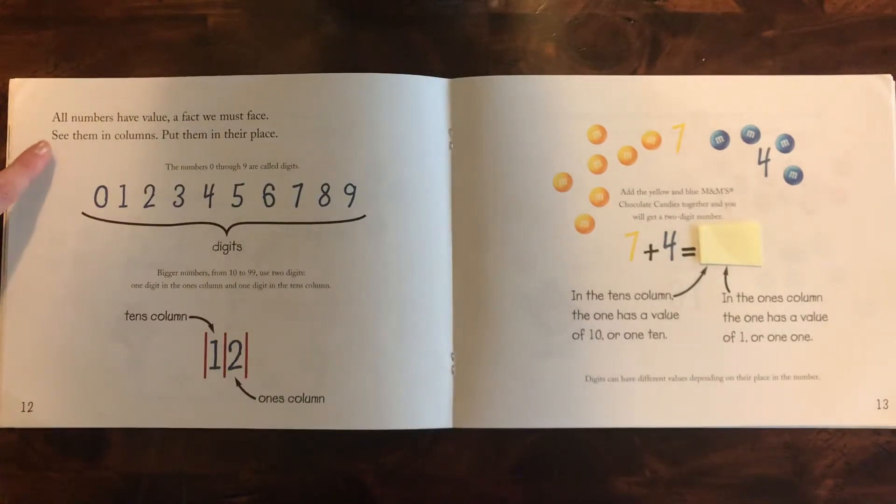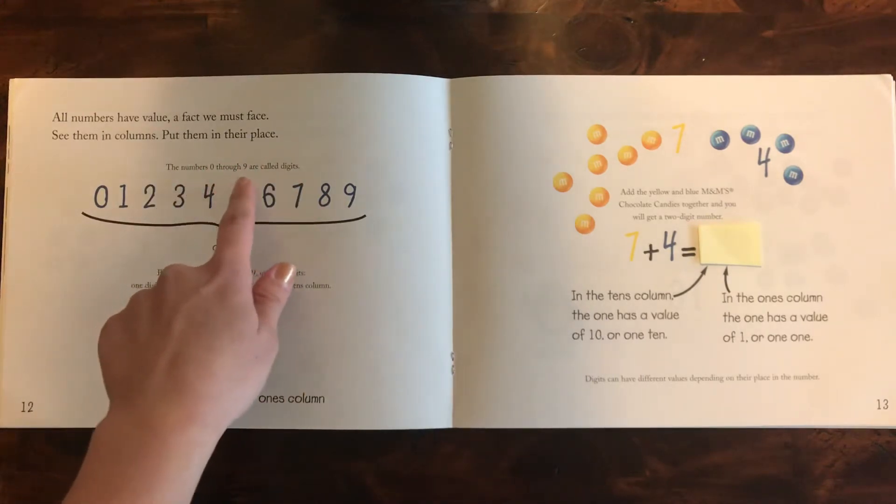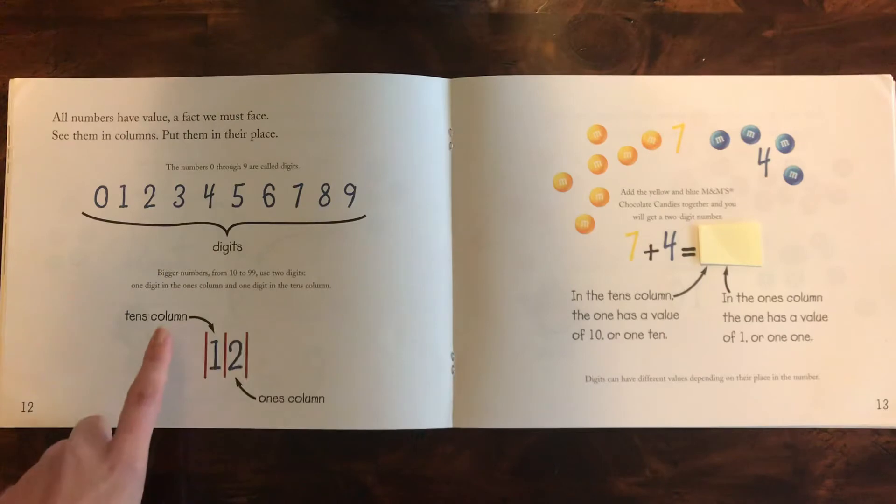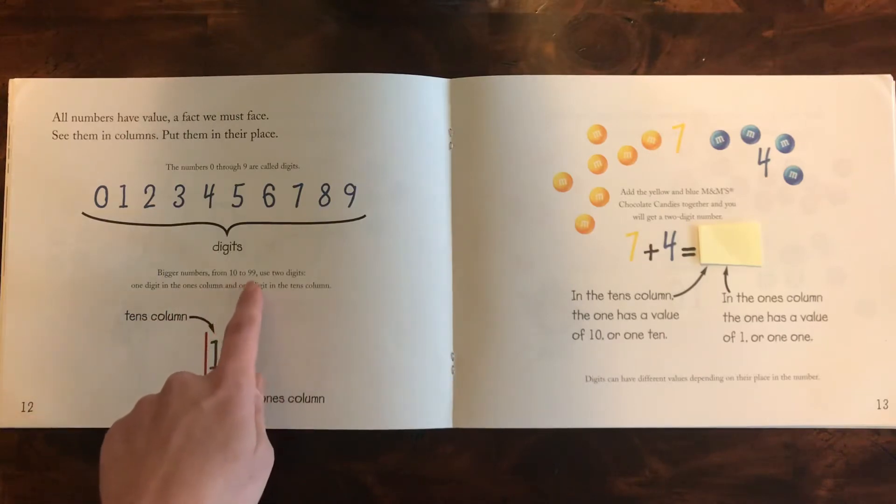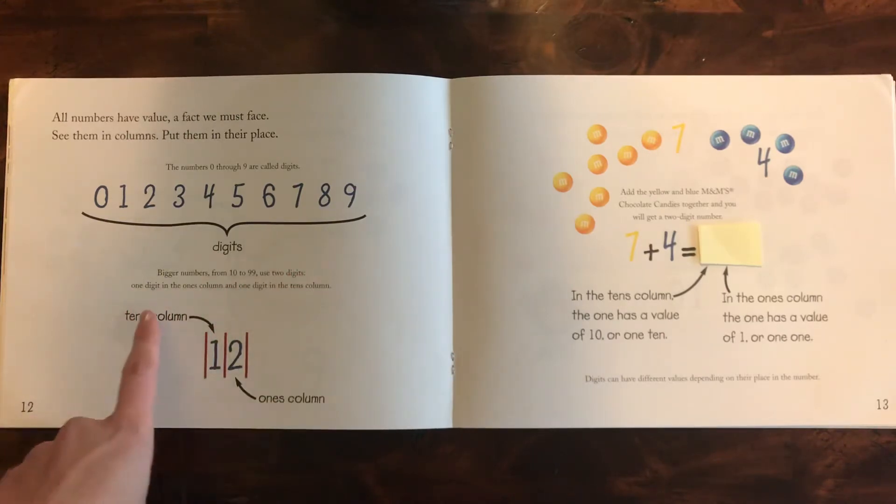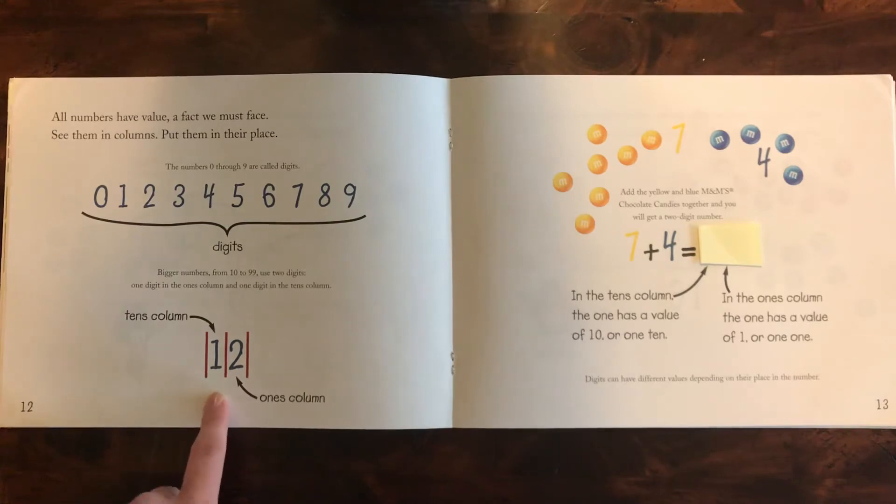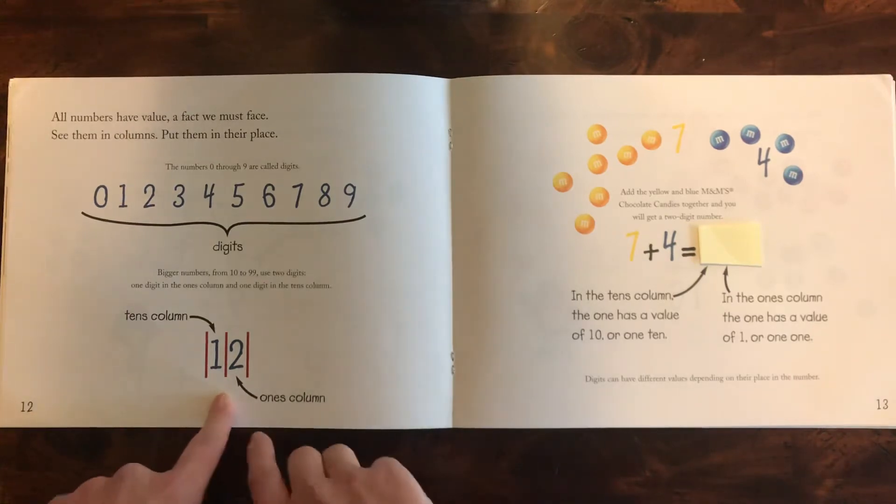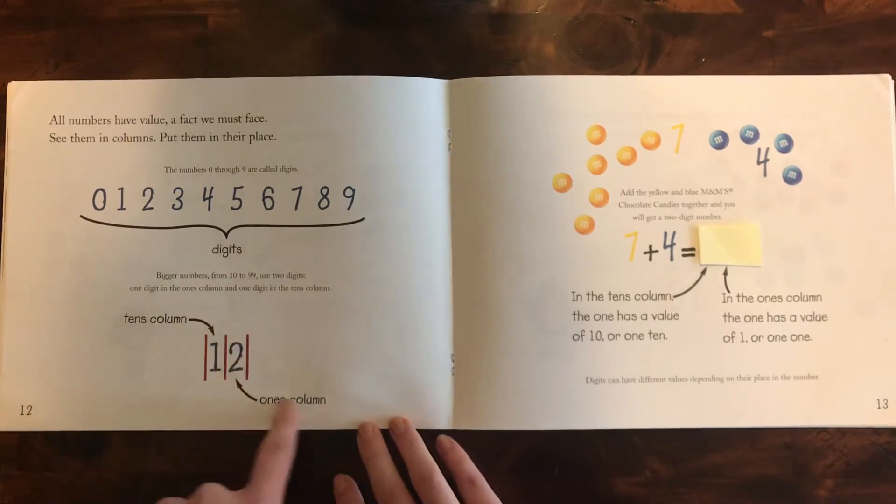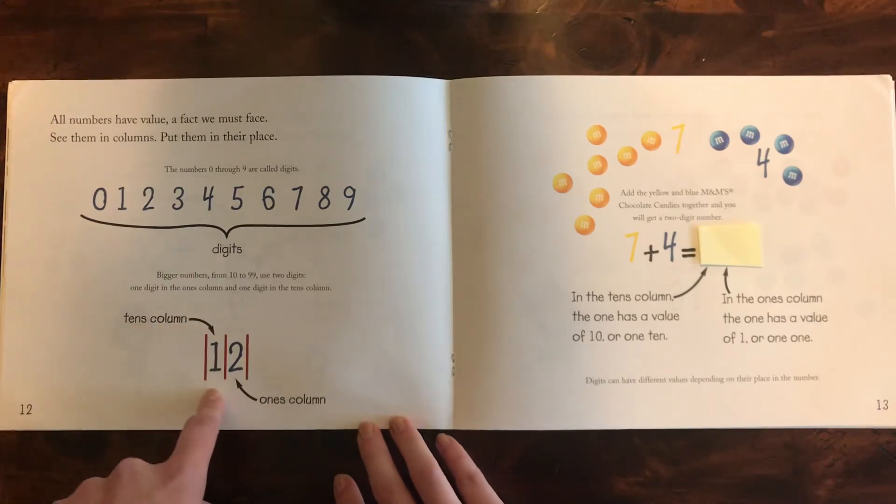All numbers have value, a fact we must face. See them in columns. Put them in their place. The numbers 0 through 9 are called digits. Bigger numbers from 10 to 99 use two digits. One digit in the ones column and one digit in the tens column. So we learned that this is the ones column. This is the tens column.